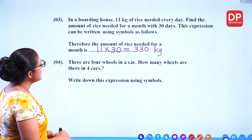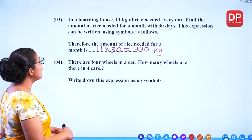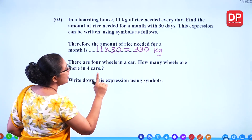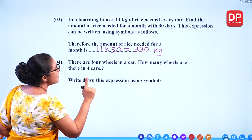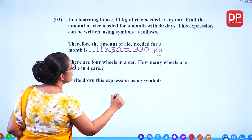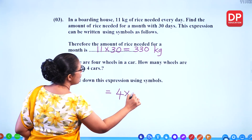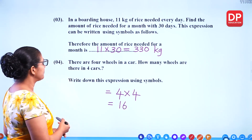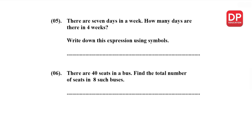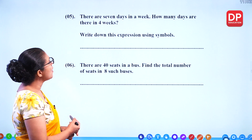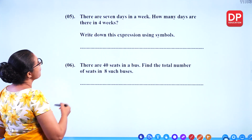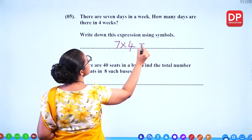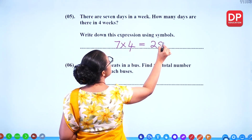There are 4 wheels in a car. How many wheels are there in 4 cars? Write down this expression using symbols. Number of wheels in one car is 4, so number of wheels in 4 cars is 4 times 4, which equals 16 wheels. There are 7 days in a week. How many days are there in 4 weeks? That's 7 times 4, which equals 28 days.